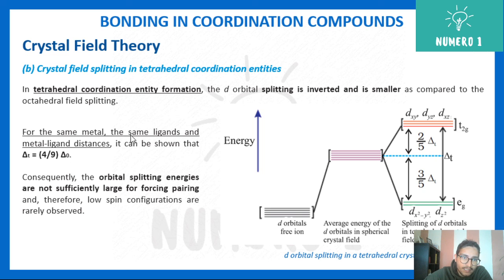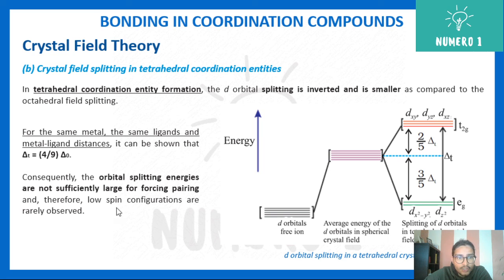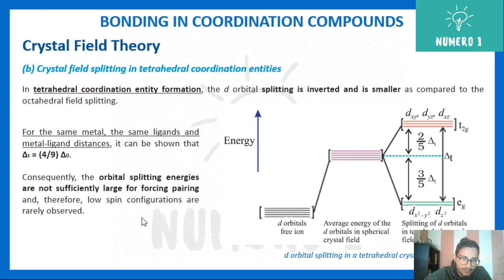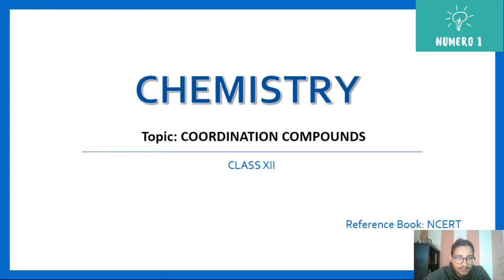The tetrahedral splitting energy delta_t is related to the octahedral splitting by delta_t = (4/9) delta_o for the same metal and same ligands. Since tetrahedral splitting is smaller, the orbital splitting energies are not sufficiently large to force pairing, and therefore low spin configurations are rarely observed in tetrahedral complexes.